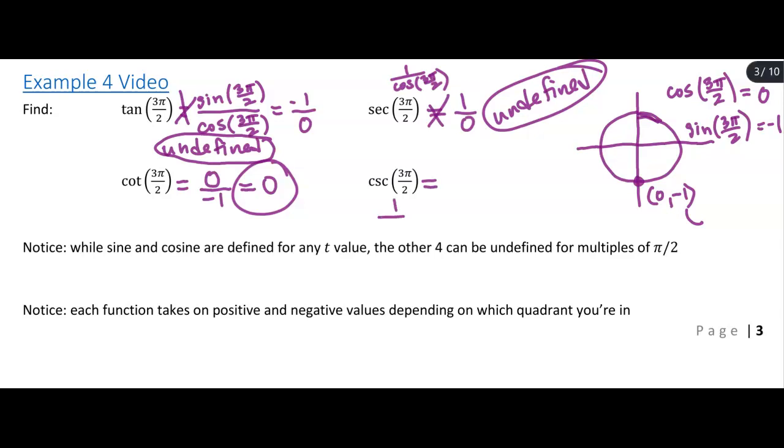Cosecant. Cosecant is 1 over sine. So the value of sine is your y value. The value of sine is negative 1. If we do the reciprocal of negative 1, we actually just get negative 1 for that one.